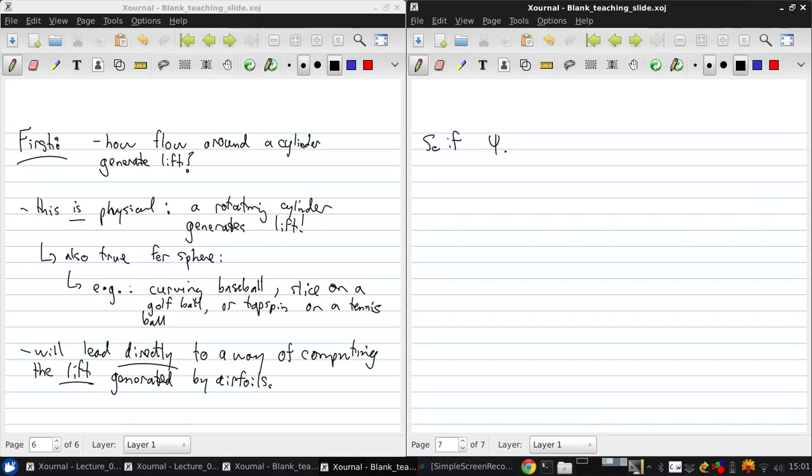So if the stream function for the non-lifting flow around the cylinder, you'll recall, is V infinity R sine theta (1 minus R squared over r squared) for non-lifting, for the cylinder that has a radius capital R. And as we just saw, the stream function for the vortex flow is gamma over 2 pi ln r, plus some constant, which is arbitrary, can be anything.